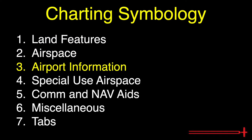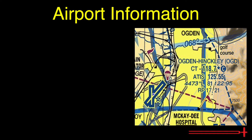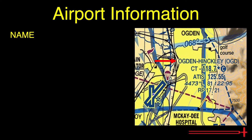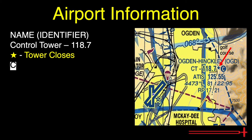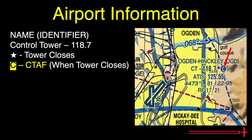Moving on to airport information, using Ogden-Hinkley Airport in Utah as an example — airport info generally follows a standard format, though not everything will be included if not present at the airport. First, the name of the airport, Ogden-Hinkley, followed by the ICAO identifier, OGD. Up next is the control tower frequency at 118.7. Airports with multiple control towers may have multiple frequencies listed. A star indicates the control tower is not always open, and the C lets us know that communications will continue on common traffic advisory frequency, where pilots broadcast their locations and intentions.